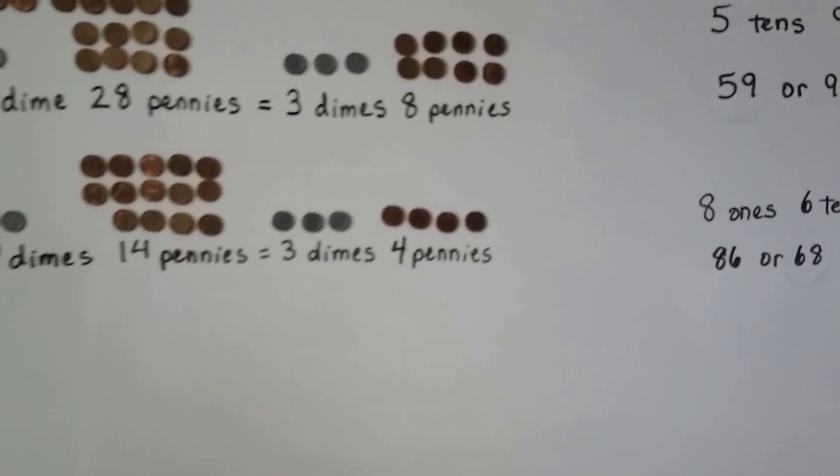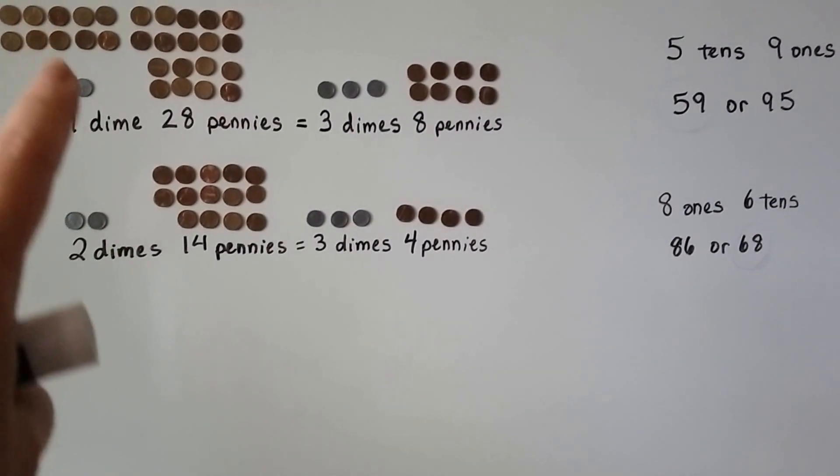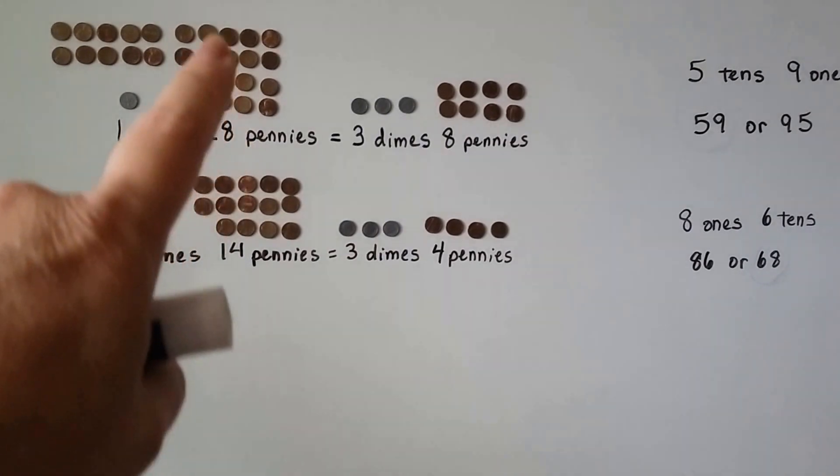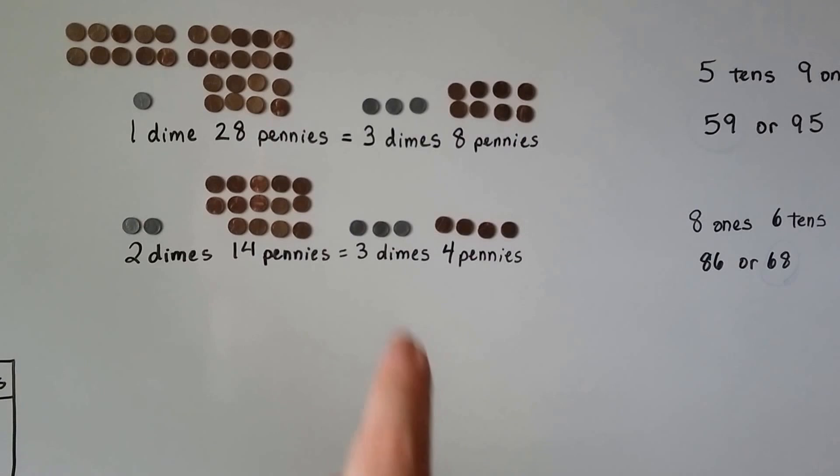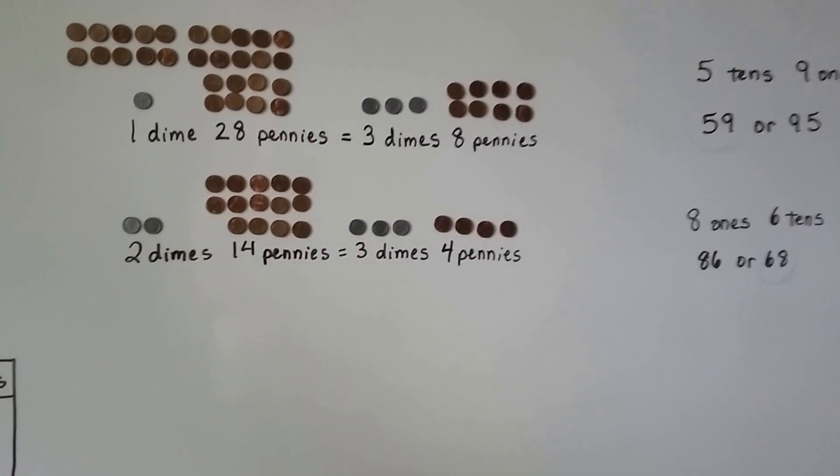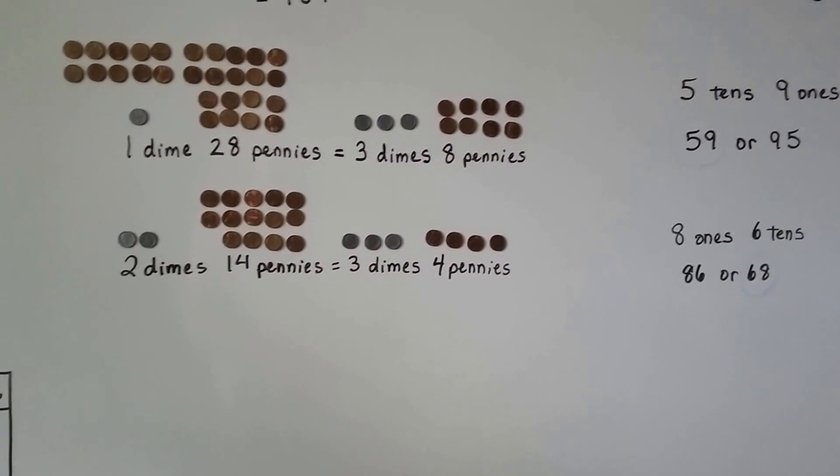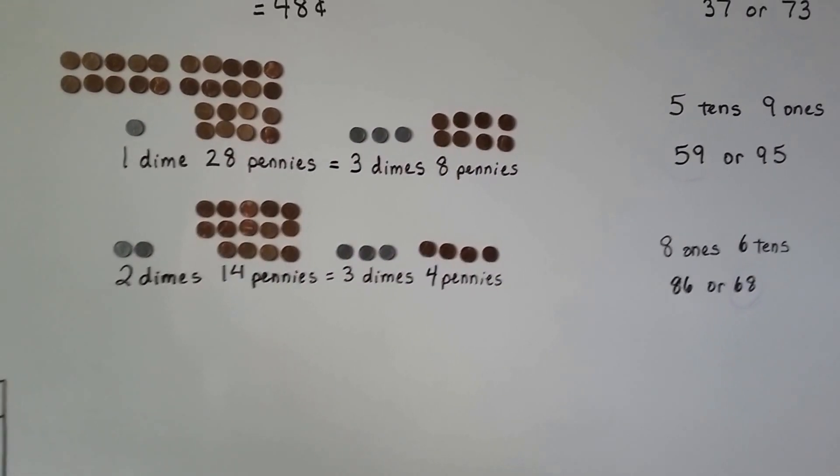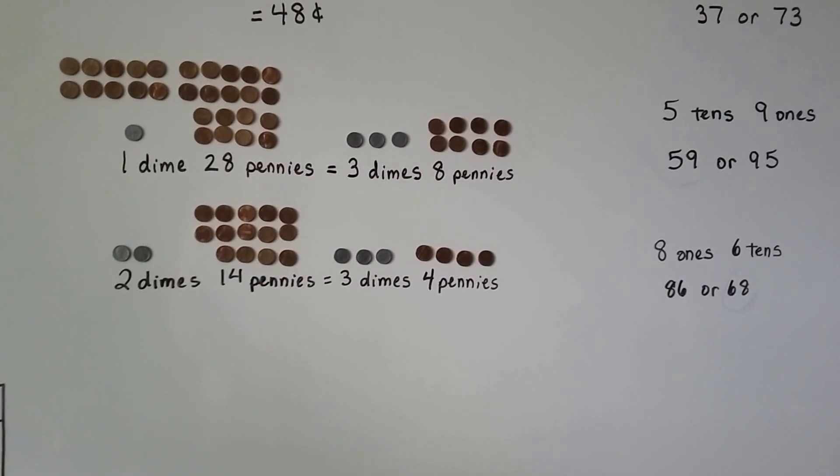So we can trade pennies to be a dime. We can take 10 pennies and turn them into a dime. We can take another 10 pennies and turn it into another dime. Every time we get 10 pennies, we trade it to a dime, and that gives us more dimes and less pennies. I hope you're having a great day, and I'll see you next video. Bye!